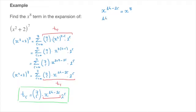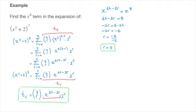We write 14 minus 2r equals 8 and solve for r. That leads to negative 2r equals 8 minus 14, which is negative 6. Dividing both sides by negative 2 gives r equals negative 6 over negative 2, so r is equal to 3. This allows us to pinpoint the x to the power of 8 term — all we need to do is replace r by 3 inside the general term.